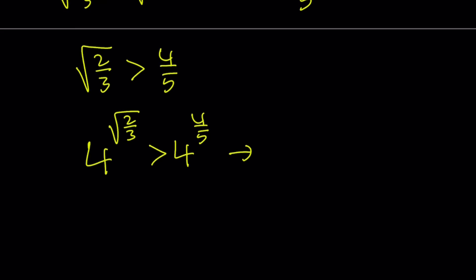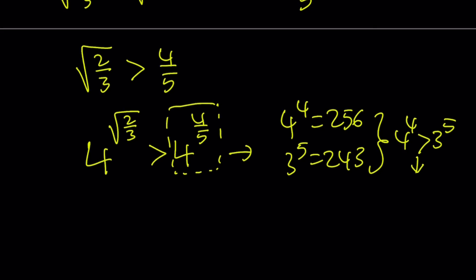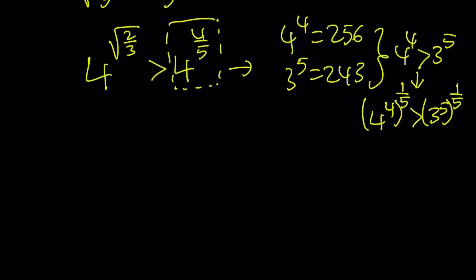It's interesting if you realize that 4 to the fourth power is 256, and 3 to the fifth power is 243, and 4 to the fourth is greater than 3 to the fifth. Now if I divide the exponents by 5 — that is, raise both sides to the power 1 fifth, equivalent to taking the fifth root of both sides — since these are positive numbers this is valid. This gives us 4 to the power 4 fifths is greater than 3.